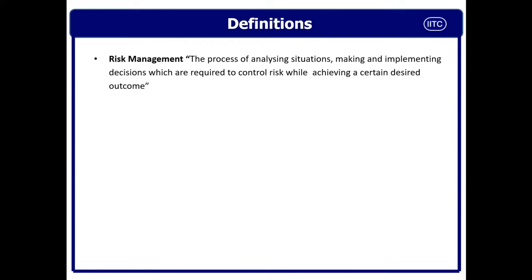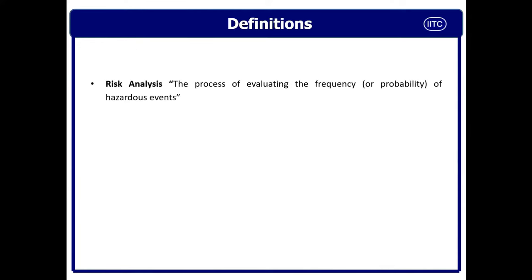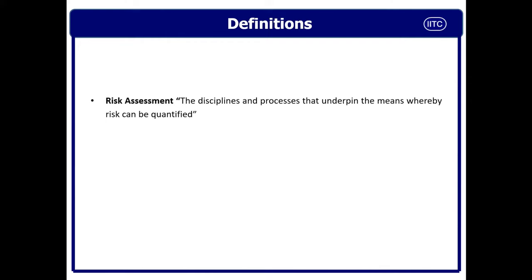Risk management is the process of analyzing a situation and making and implementing decisions required to control risk while achieving a certain desired goal or outcome. Risk analysis is the process of evaluating the frequency of a hazardous event. Risk assessment is the discipline and process that underpins the means whereby risk can be quantified — this is how we will use the risk matrix, and you will understand the meaning of risk assessment practically in the coming slides.